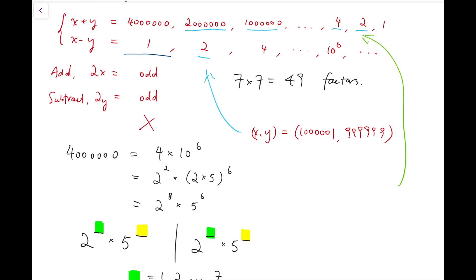Whereas for this case, when the sum is 2 and the difference is 2 million, then I will get instead still 1 million and 1, but y is minus 999,999.